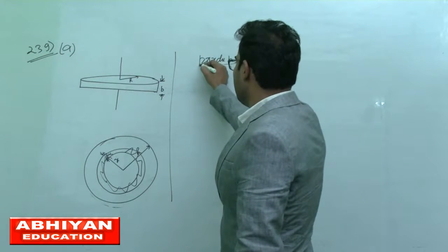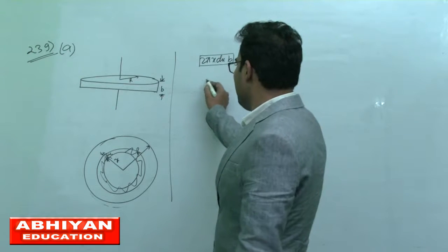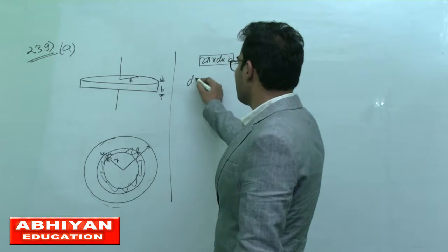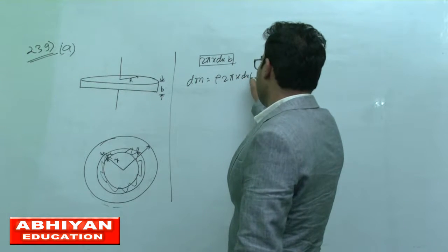The mass in this volume will be dm, so dm equals density rho times volume, which is 2 pi x dx times b.